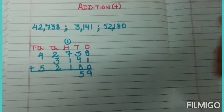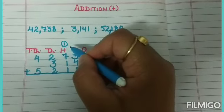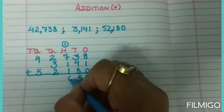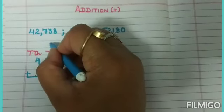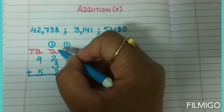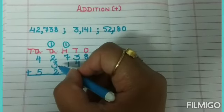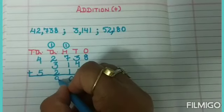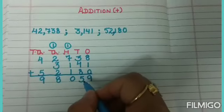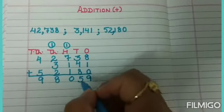Then 7 plus 1 equals 8, 8 plus 1 equals 9, 9 plus 1 equals 10. Write 0, carry over 1. 2 plus 1 equals 3, 3 plus 3 equals 6, 6 plus 2 equals 8. 5 plus 4 equals 9.